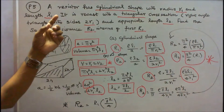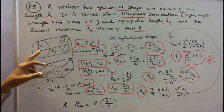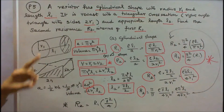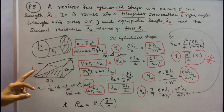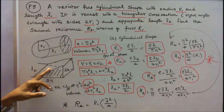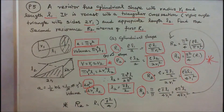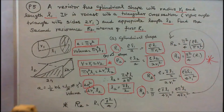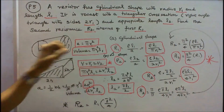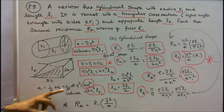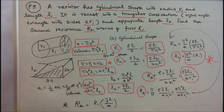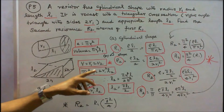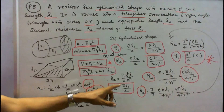Problem number five: a resistor has a cylindrical shape with radius R1 and length L1. It is recast with a right-angle triangular cross-section with sides 2R1 and appropriate length L2. The cross-sectional area of the cylinder is A = πR1². Volume V1 = πR1²·L1. The triangular cross-section area is ½ × 2R1 × 2R1 = 2R1². Volume V2 = 2R1²·L2. Since volumes are equal, L2 = πL1/2.